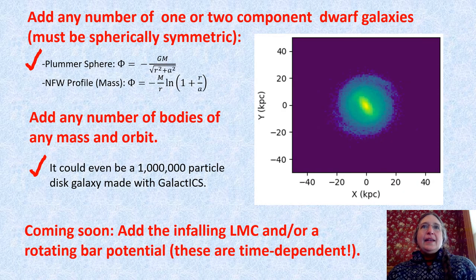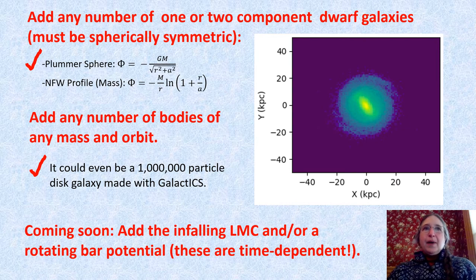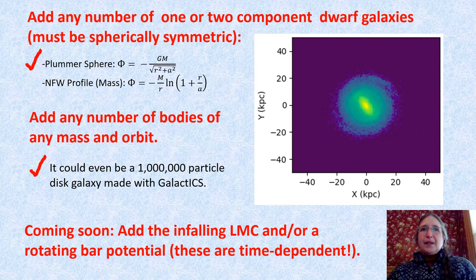Then add any number of one or two component dwarf galaxies, and any number of bodies of any mass or orbit — even if it's a million particle disk galaxy made with Galactics. Soon it will also be able to add the LMC and a rotating bar.